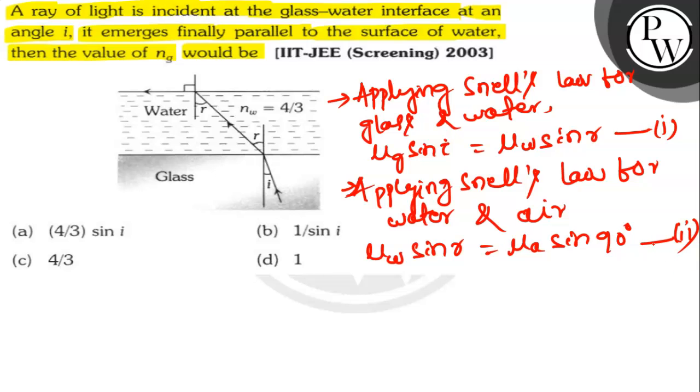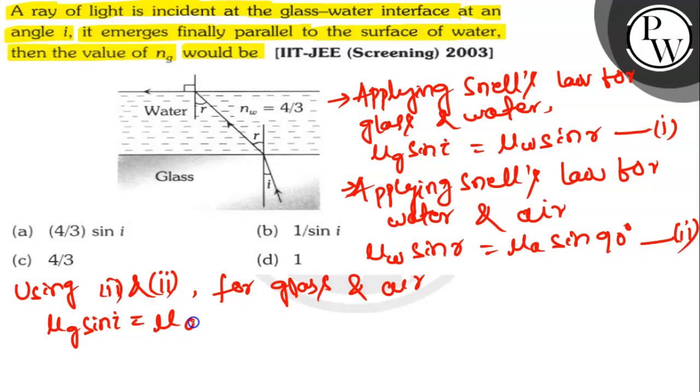Using equations 1 and 2, we can apply Snell's law for glass and air. So here μG sin I is equal to μA sin 90 degree.